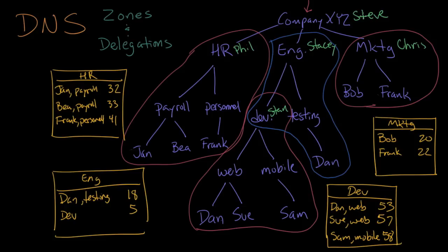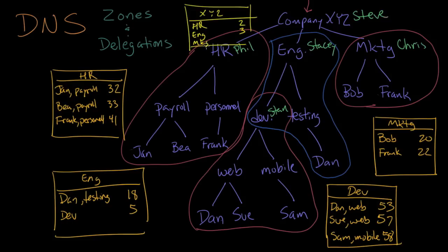Each one of the people with a list looks at it to see where the call should be handed off. Steve also has his own list for XYZ company: HR is handled by Phil at extension 2, engineering is at extension 3, and marketing is at extension 4. For example, if a call comes in for Dan in testing in the engineering division, Steve doesn't know Dan's number but hands the call off to extension 3. Stacy receives the call, looks in her list, and finds Dan in testing at extension 18, then connects the call directly.